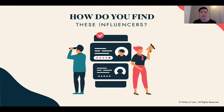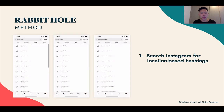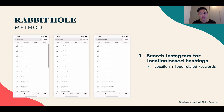Now, how do you find these influencers? We use something called the rabbit hole method. It basically means we search for influencers through hashtags — that's the number one way. How do you do that? Use location-based hashtags: put in your location and put in the food-related keywords.